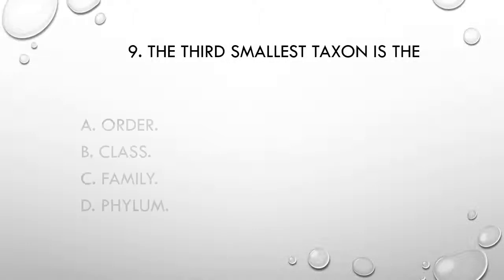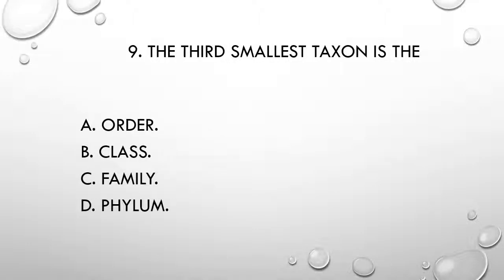Question 9. The third smallest taxon is the: A) order, B) class, C) family, D) phylum.